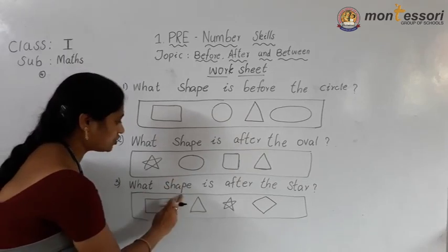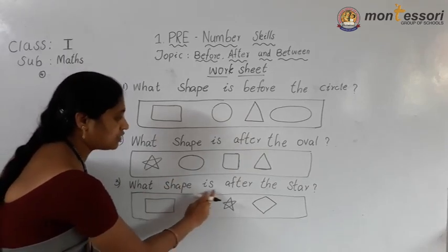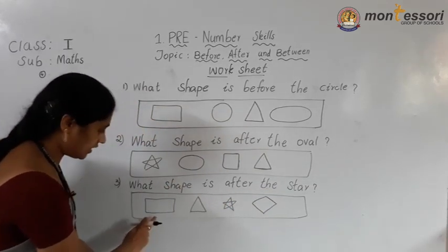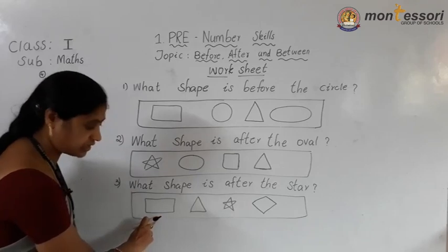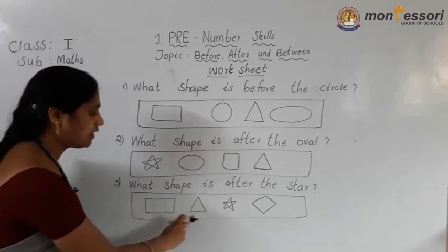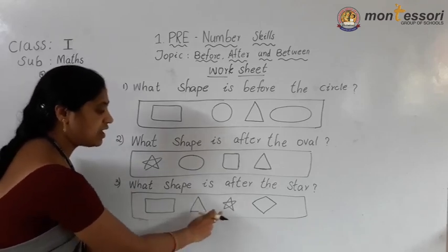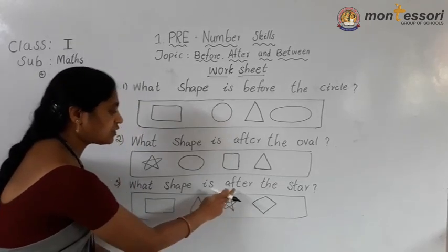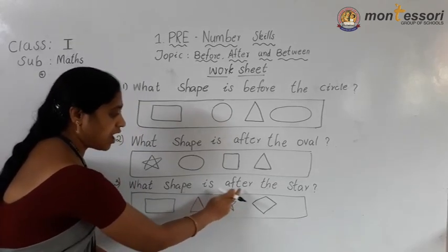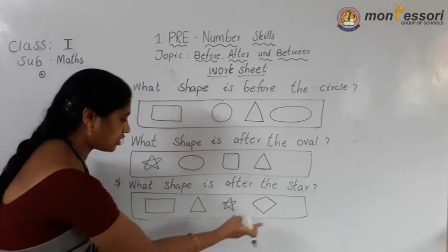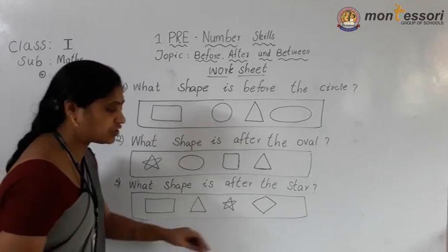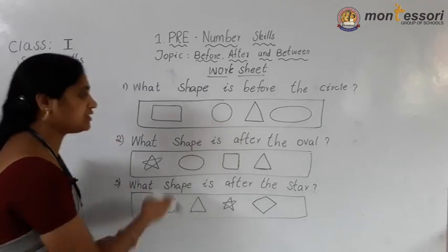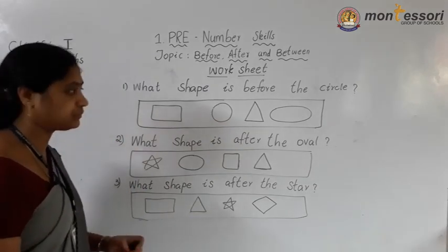And what shape is after the star? Here these shapes are rectangle, triangle, star and diamond. After the star, which shape is there? You select one. This is your mass homework.